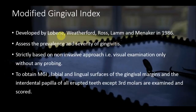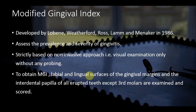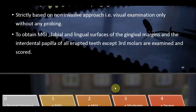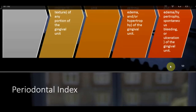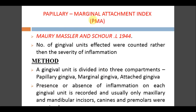The Modified Gingival Index (MGI) was developed by Lobene, Weatherford, Ross, Lamb, and Menaker in 1986. It assesses the prevalence and severity of gingivitis using a strictly non-invasive approach — visual examination only, with no probing. Labial and lingual surfaces of the gingival margin and interdental papillae of all erupted teeth except third molars are examined and scored. Scoring: 0 = no inflammation; 1 = mild inflammation affecting only a portion of the gingival unit; 2 = mild inflammation of the entire gingival unit; 3 = moderate inflammation with redness, edema, and hypertrophy; 4 = severe inflammation with spontaneous bleeding.